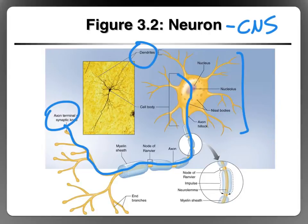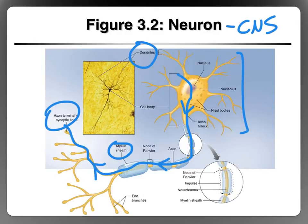Action potentials can only travel in one direction — they're not going to go backwards. Here we have the myelin sheath, which we talked about before. It insulates the axon and allows the action potential to travel faster. Remember that in a type 2 fiber we have a larger axon because there is a greater myelin sheath, and that allows the action potential to travel faster — that's one of the reasons why type 2 fibers are fast twitch.